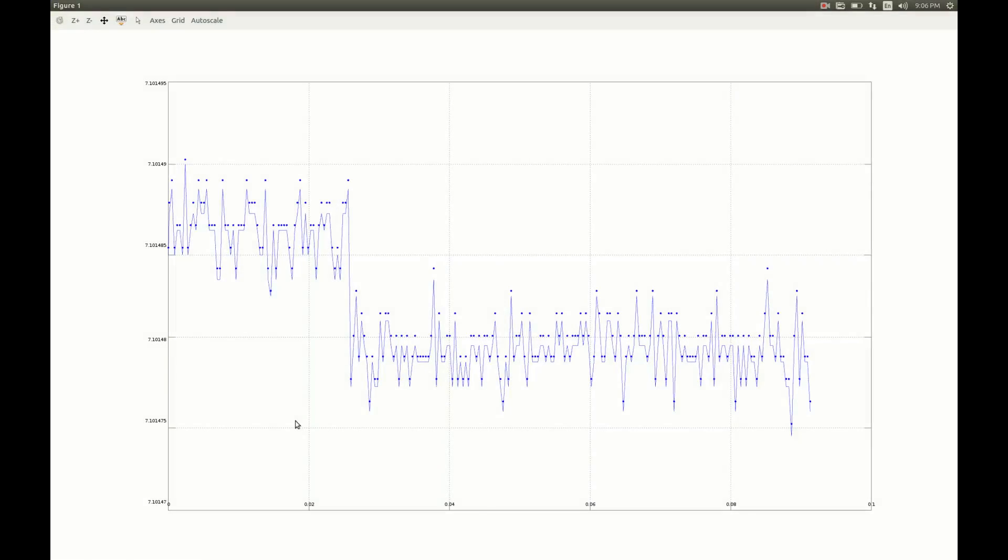Here is this drop measured by Hewlett-Packard meter. At this point I connected Datron. We have two divisions here corresponding to one count on the meter. So the drop was less than one count. Let's call it one ppm.